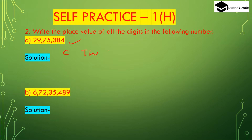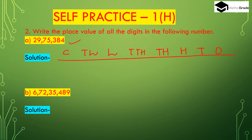The place value chart shows: ten-lakhs, lakhs, ten-thousands, thousands, hundreds, tens, ones. So for 29,75,384: 2 is 20 lakhs, 9 is 9 lakhs, 7 is 70,000, 5 is 5,000, 3 is 300, 8 is 8 tens, 4 is 4 ones.